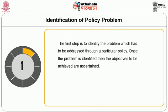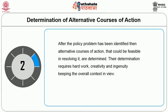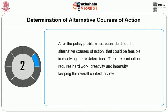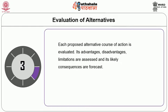The first step is identification of the policy problem: identify the problem to be addressed through a particular policy, and once identified, ascertain the objectives to be achieved. Second, determination of alternative course of action: after the policy problem has been identified, alternative courses of action that could be feasible in resolving it are determined — requiring hard work, creativity and ingenuity while keeping the overall context in view. Third, evaluation of alternatives: each proposed alternative course of action is evaluated, its advantages, disadvantages and limitations assessed, and its likely consequences forecast.